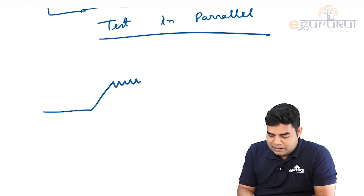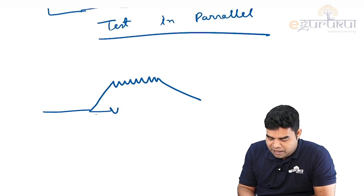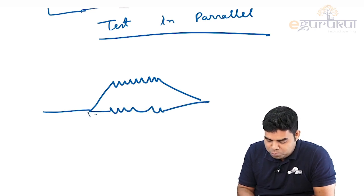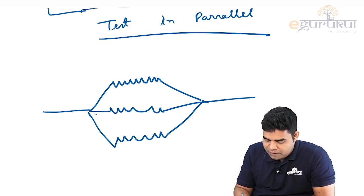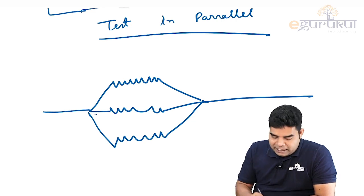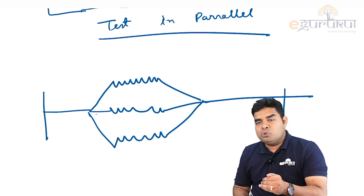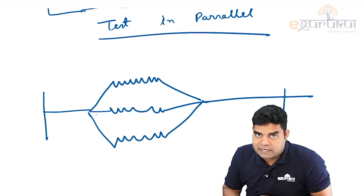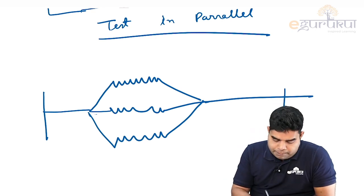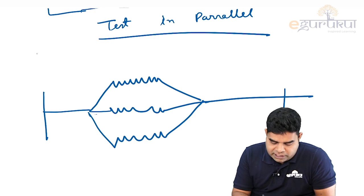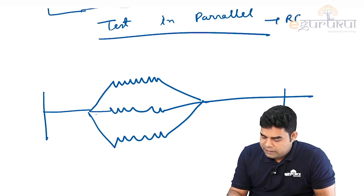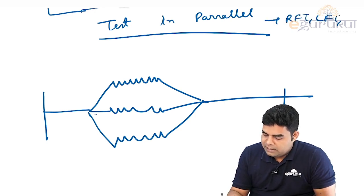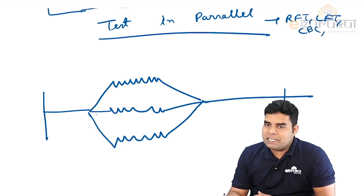Test in parallel is like connecting resistance in parallel—it looks like a mouse. It means at the same time we are doing two or three tests on a person. The most common example is renal function test, liver function test, RFT, LFT, CBC, thyroid profile.